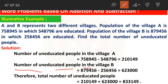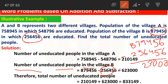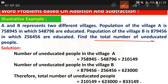Now for village B: uneducated people = total population minus educated = 8,79,456 minus 2,56,456. 6 minus 6 is 0; 5 minus 5 is 0; 4 minus 4 is 0; 9 minus 6 is 3; 7 minus 5 is 2; 8 minus 2 is 6. The answer is 6 lakhs 23,000. This is the number of uneducated people in village B.